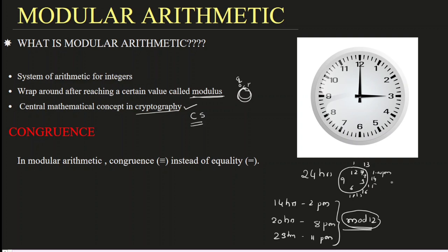So here we consider 13 hours as 1 pm. For 1 pm, we are just doing 13 mod 12 operation. When 13 is divided by 12, what is your remainder? 1. This 1 is called 1 pm. In the same way, 14 divided by 12 — remainder is 2. That is what — 14 hours means 2 pm. 14 mod 12 means 14 divided by 12, and 2 is the remainder. So it is 2 pm. I hope things are clear now.